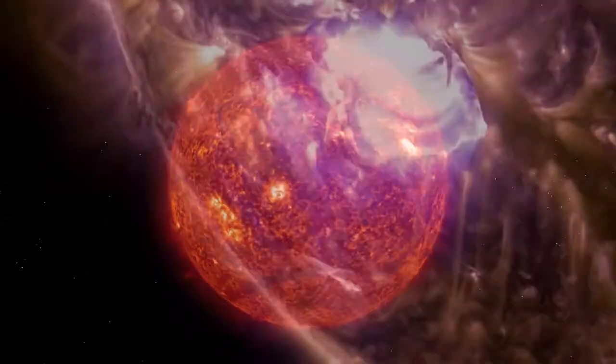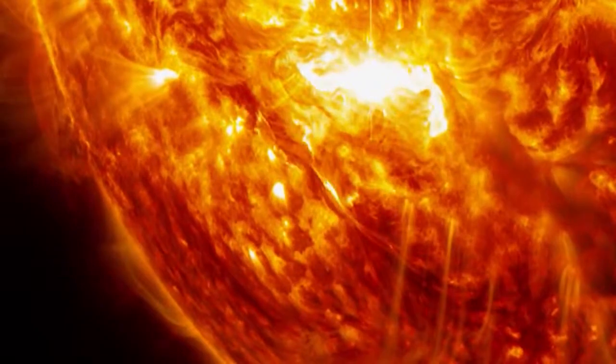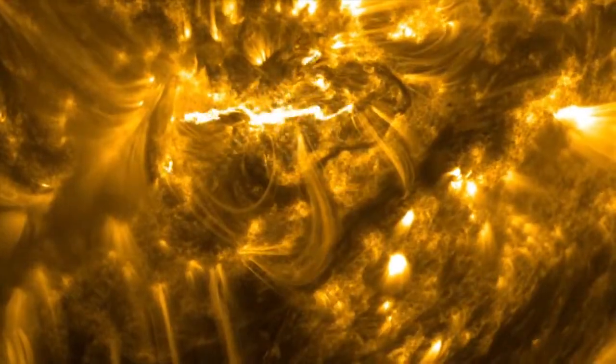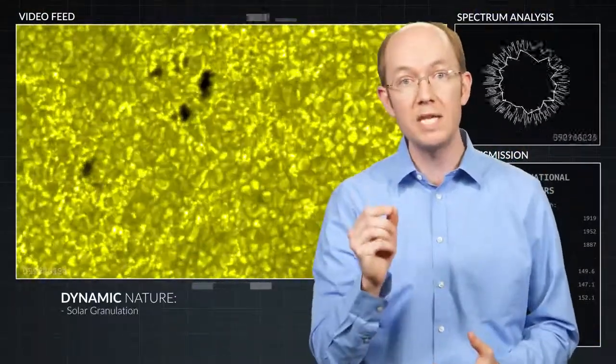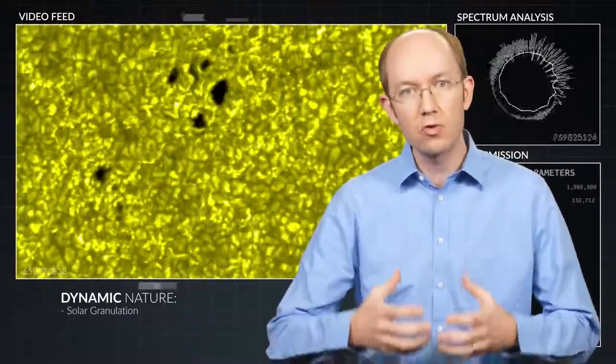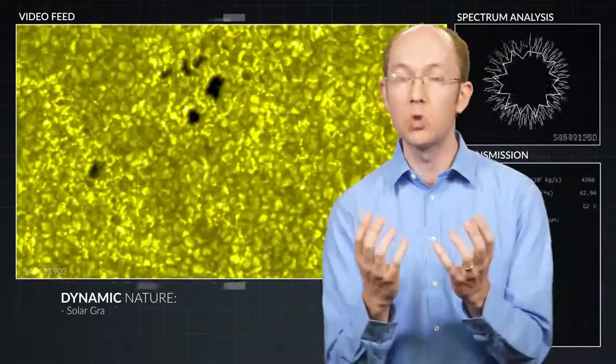The surface of the Sun is constantly churning like a pot of boiling water. Large columns of matter rise from the hot interior while cooler regions sink back down. This convective motion creates granulation, an effect seen at small scales within the photosphere, where cell-like structures or granules form with hot matter surrounded by cooler boundaries.